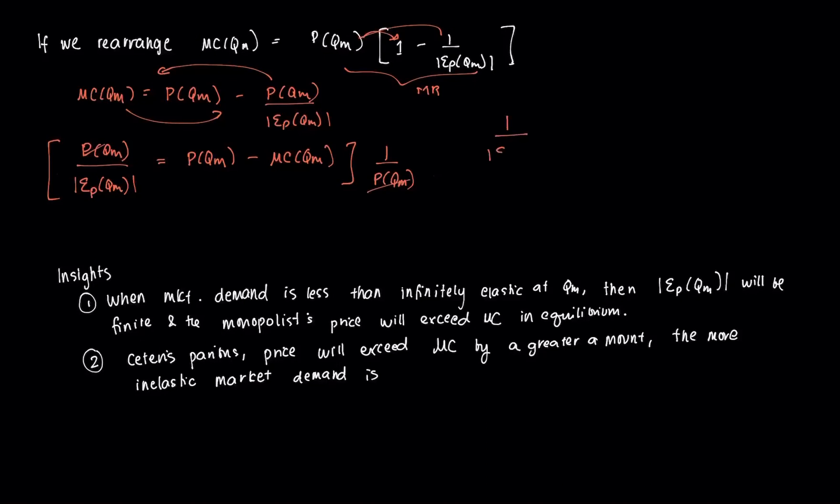So we're going to be left with 1 over the price elasticity of the monopolist being equal to P(QM) minus MC(QM) over P(QM).